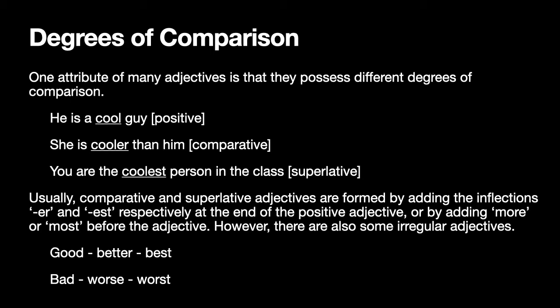The comparative degree is used when you use an adjective to compare one noun or pronoun to another, and you usually add the inflection '-er' at the end of the adjective. The superlative degree is when you have a larger group of more than two nouns to compare, saying that one particular noun is superlative to all others. For example: 'he is a cool guy' — positive degree; 'she is cooler than him' — comparative; 'you are the coolest person in the class' — superlative. Note that positive doesn't necessarily mean something good — you can also say 'he is a bad guy,' which is also a positive degree.